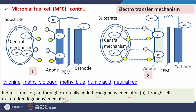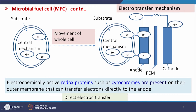Different types of mediators can be used externally: thionine, methyl viologen, methyl blue, humic acid, neutral red, etcetera. People have used these as external mediators. For direct transfer, the electrochemically active redox proteins such as cytochromes are present on the outer membrane of the cell and can transfer electrons directly to the anode. This is the mechanism through which the electron is directly transferred from the bulk of the solution to the anode surface by the cell itself.